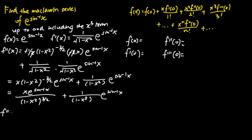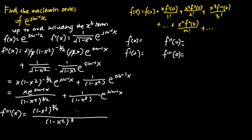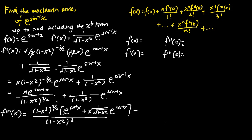Next, I will find f'''(x). I will apply the quotient rule of differentiation. For the first term, I square the denominator to get (1 minus x squared) to the power of 3. I bring the denominator up as numerator and differentiate the numerator, which consists of x and e to the power of sine inverse x, applying the product rule. Differentiating x gives 1, keeping e to the power of sine inverse x, plus keeping x and differentiating e to the power of sine inverse x to get 1 over square root of 1 minus x squared times e to the power of sine inverse x. Then differentiating (1 minus x squared) to the power of 3 over 2 gives 3 over 2 times (1 minus x squared) to the power of one half, times negative 2x.